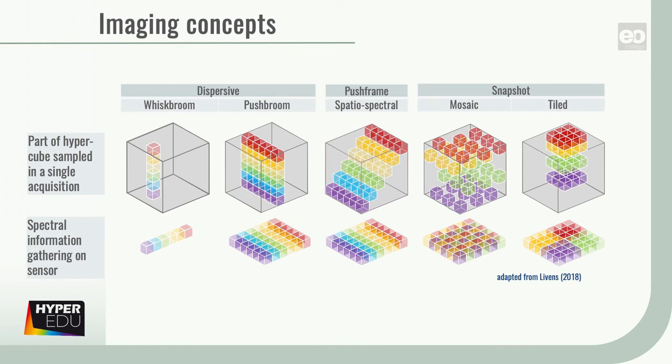Thereby, a scanning process converts the radiance received by the sensor into a continuous, time-varying optical signal. There are different scanning systems with resulting differences in data acquisition principles and properties.